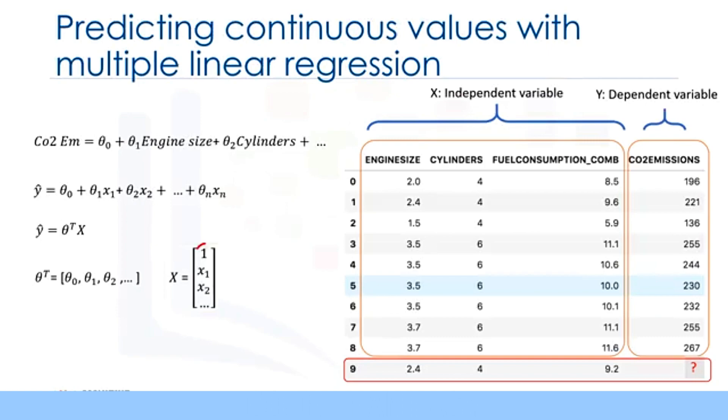The first element of the feature set would be set to 1 because it turns the theta 0 into the intercept or bias parameter when the vector is multiplied by the parameter vector. Please notice that theta transposed x in a one-dimensional space is the equation of a line. It is what we use in simple linear regression. In higher dimensions, when we have more than one input or x, the line is called a plane or a hyperplane, and this is what we use for multiple linear regression. So the whole idea is to find the best fit hyperplane for our data.